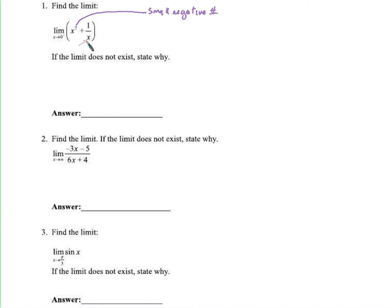What happens when I put a small negative number in for x? I'm going to take 1 and divide it by a tiny number. When you take 1 and divide it by a tiny number, you get a large number in magnitude, very far away from 0. And it will be to the left of 0 — it will be negative. So this will be a large negative number.